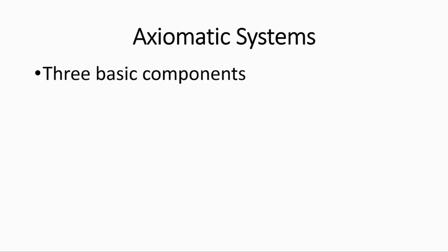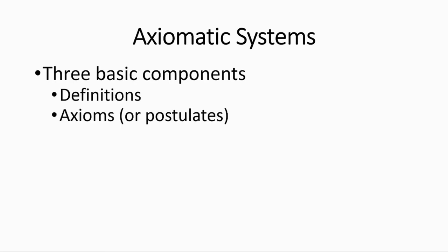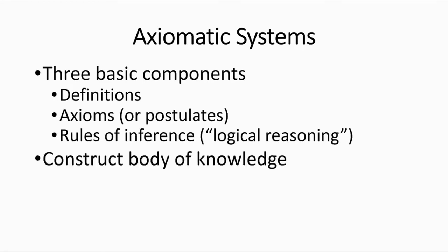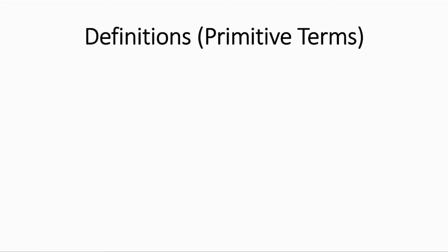Axiomatic systems. Every axiomatic system consists of three basic components: definitions, axioms or postulates, and rules of inference — the rules of logical reasoning. With these, we construct a body of knowledge by deriving conclusions that we call theorems.